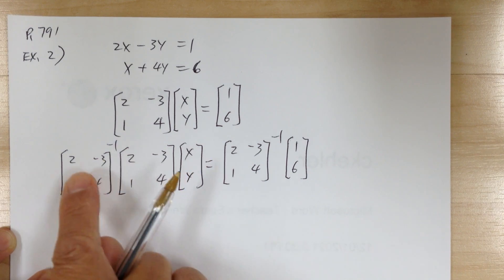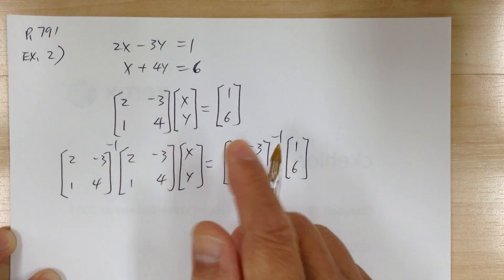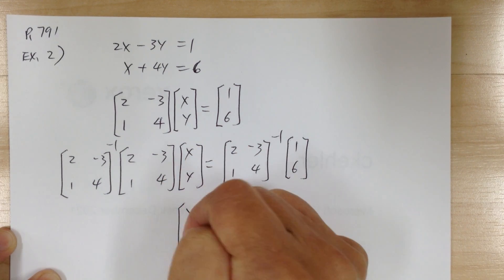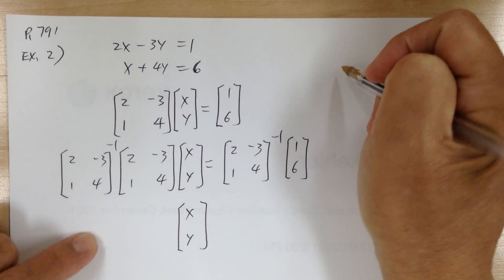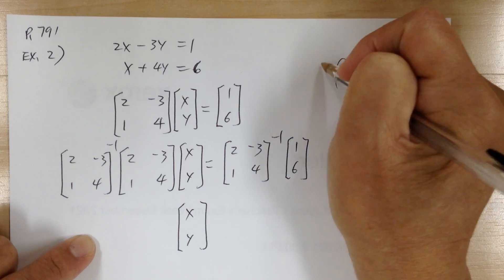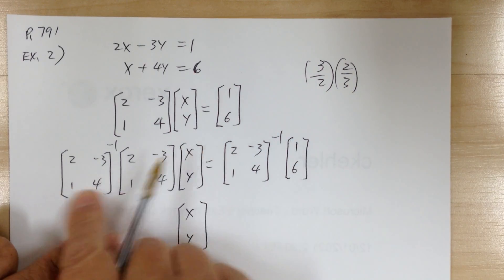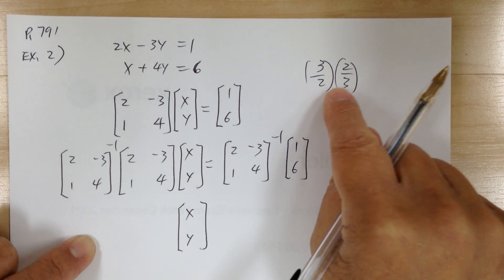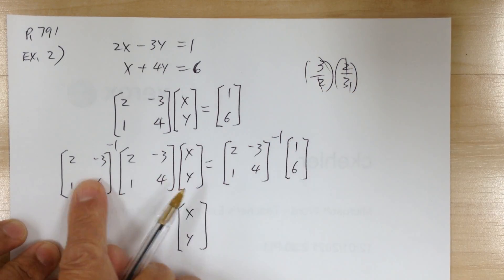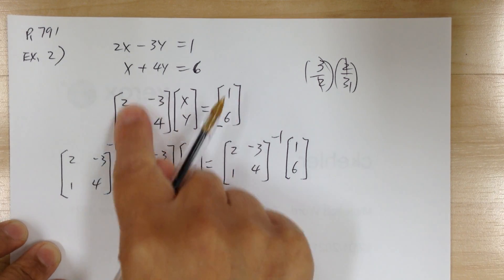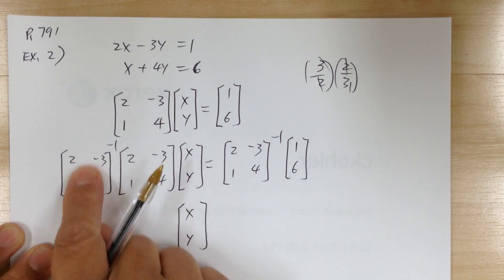The reason you multiply by the inverse is so that the inverse times itself cancels out and becomes I, meaning 1, and 1 times the variable matrix gives you the variable matrix. The inverse is just like a reciprocal — just as 2/3 times 3/2 equals 1, the inverse cancels the original matrix. That's how you get rid of the coefficient matrix in front.